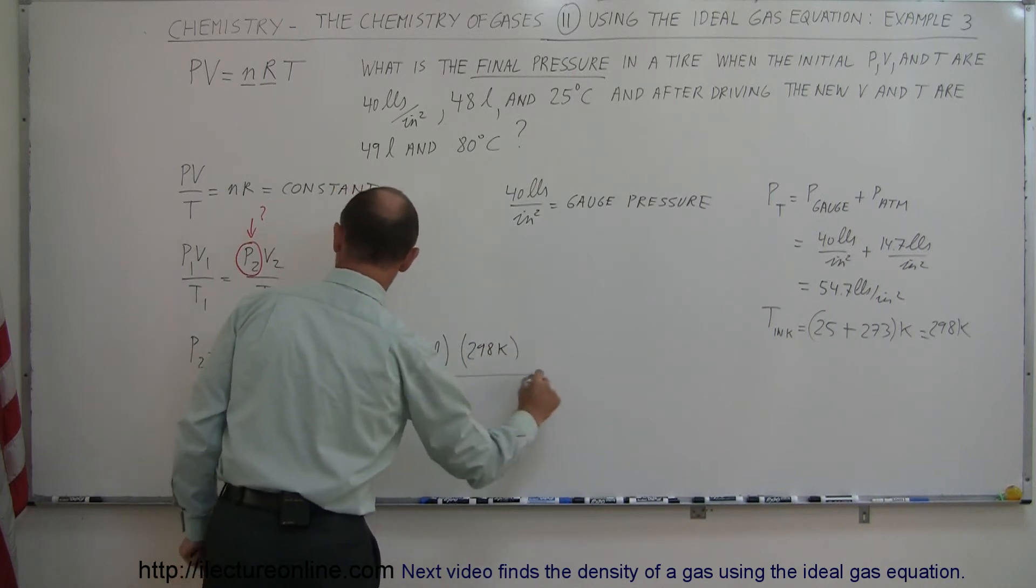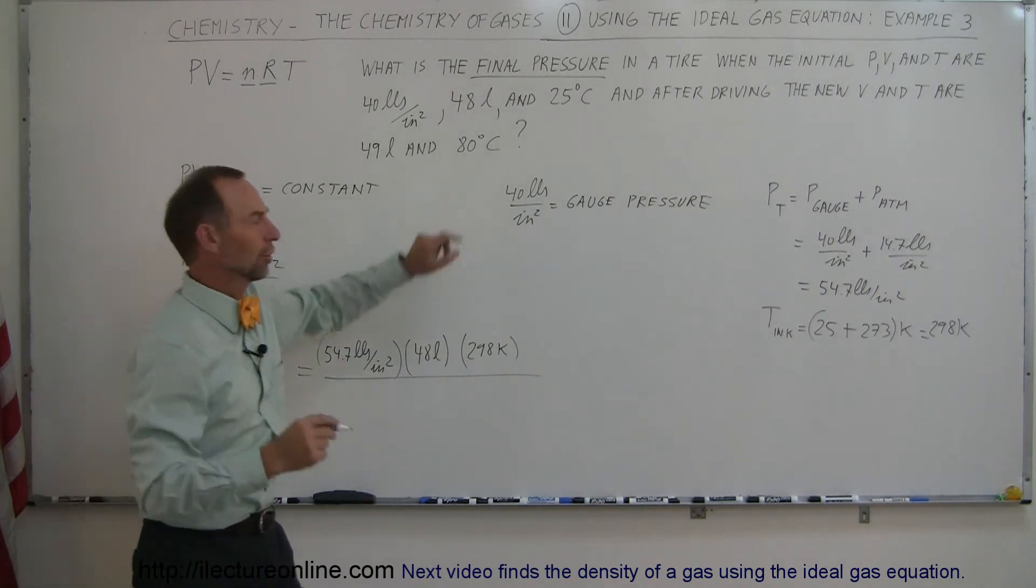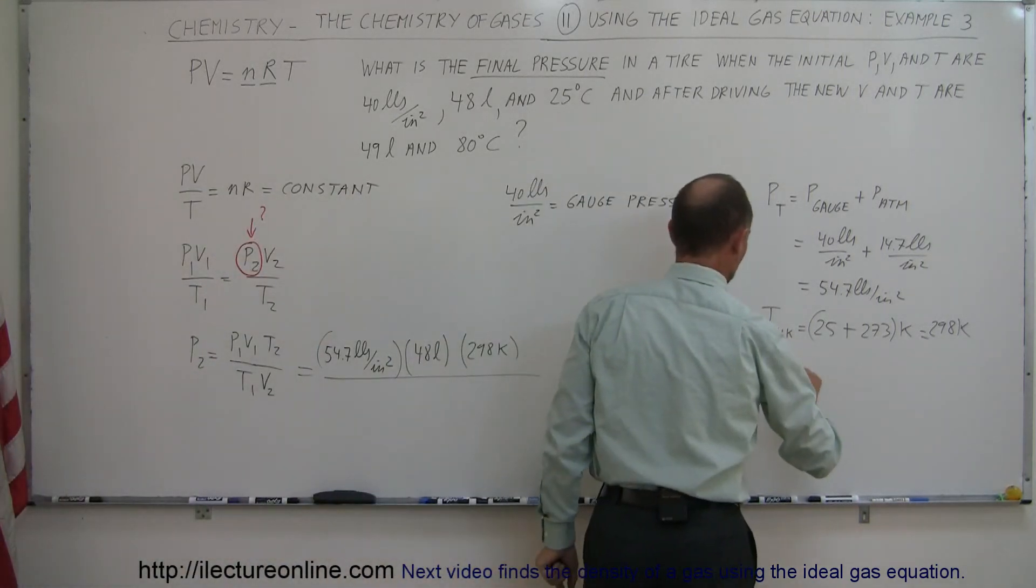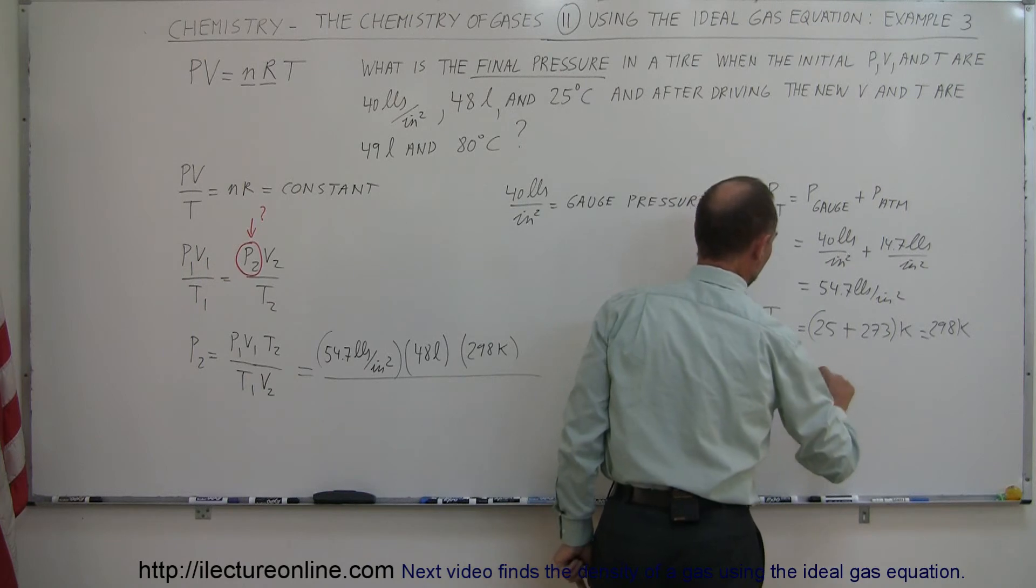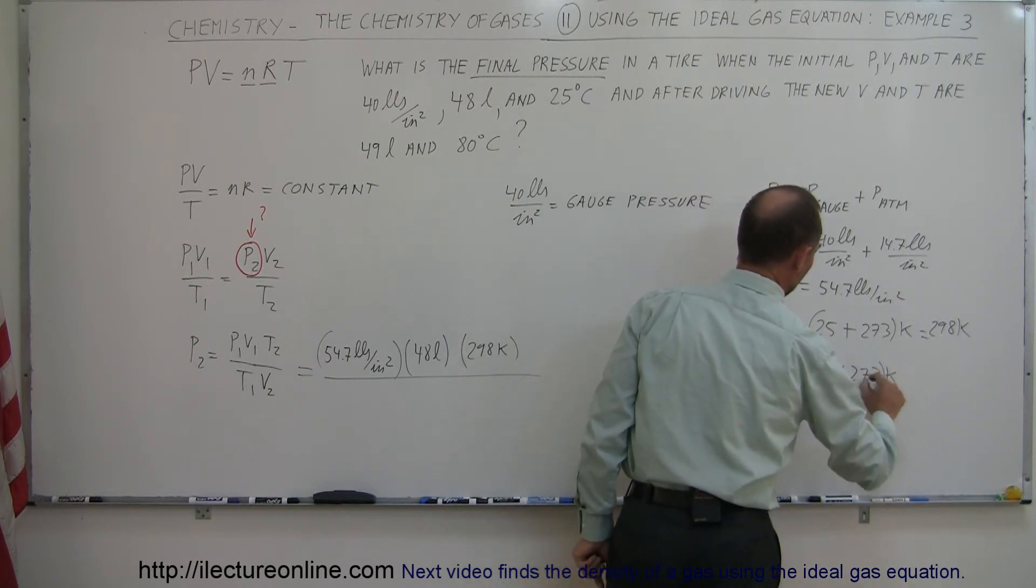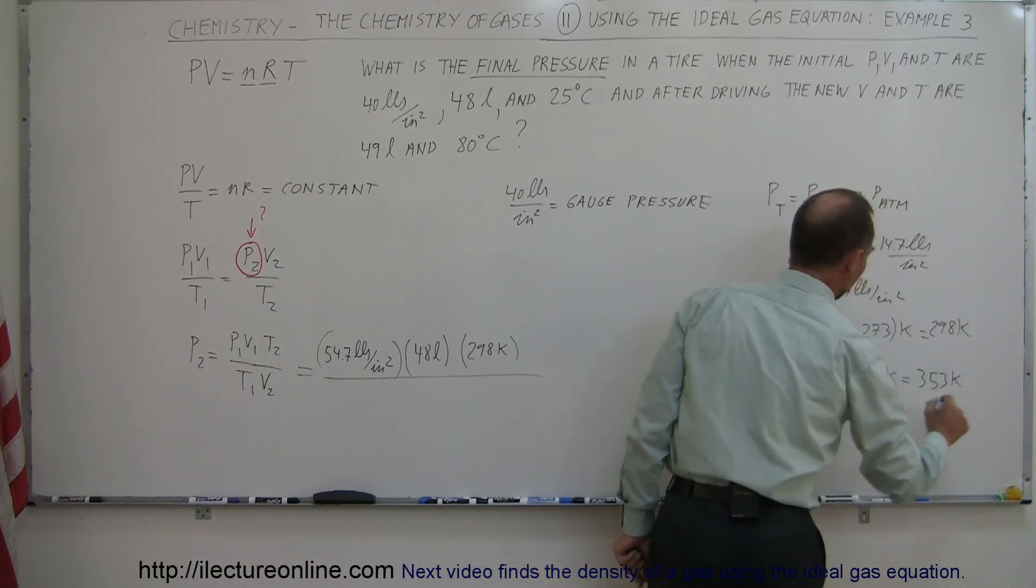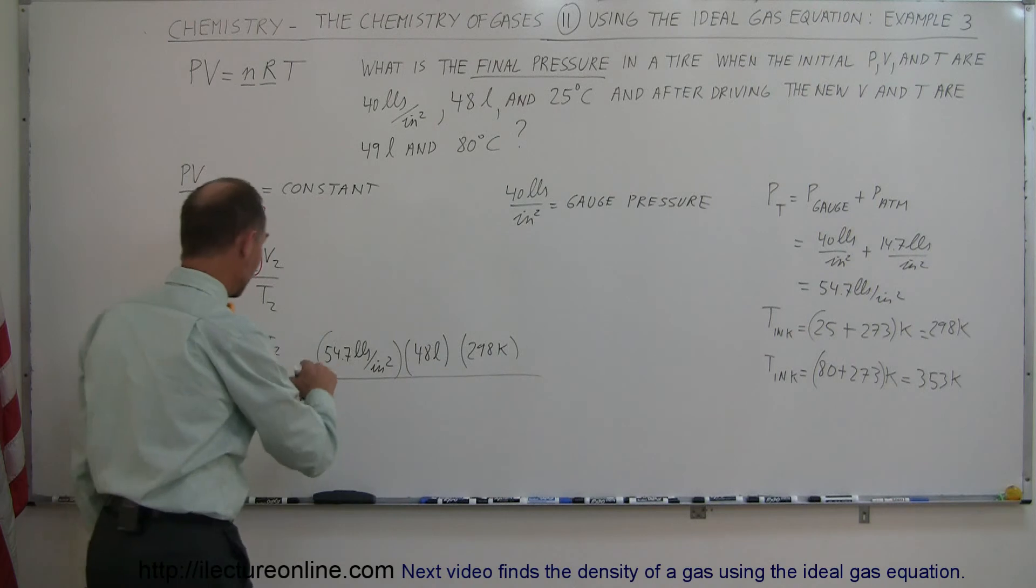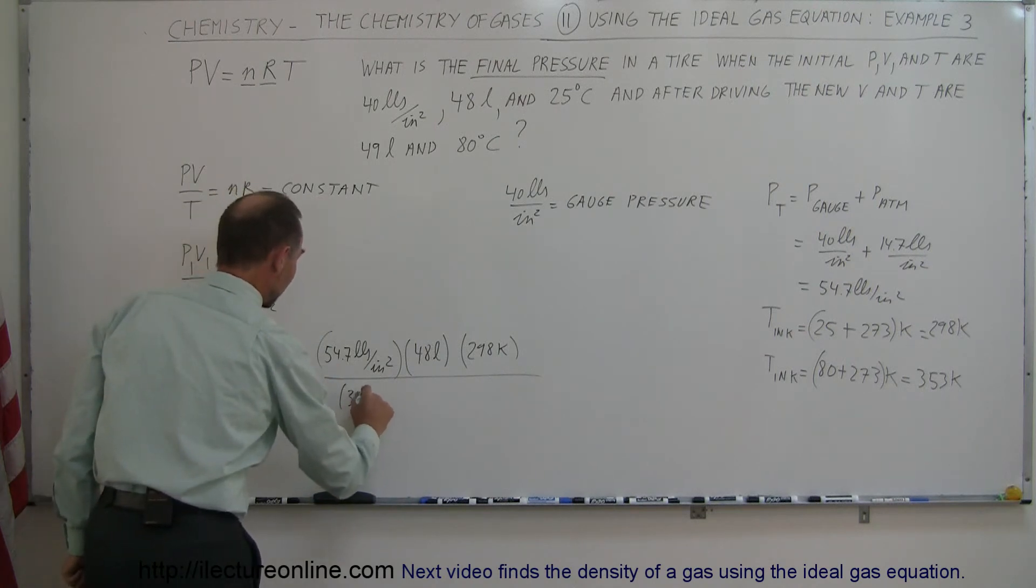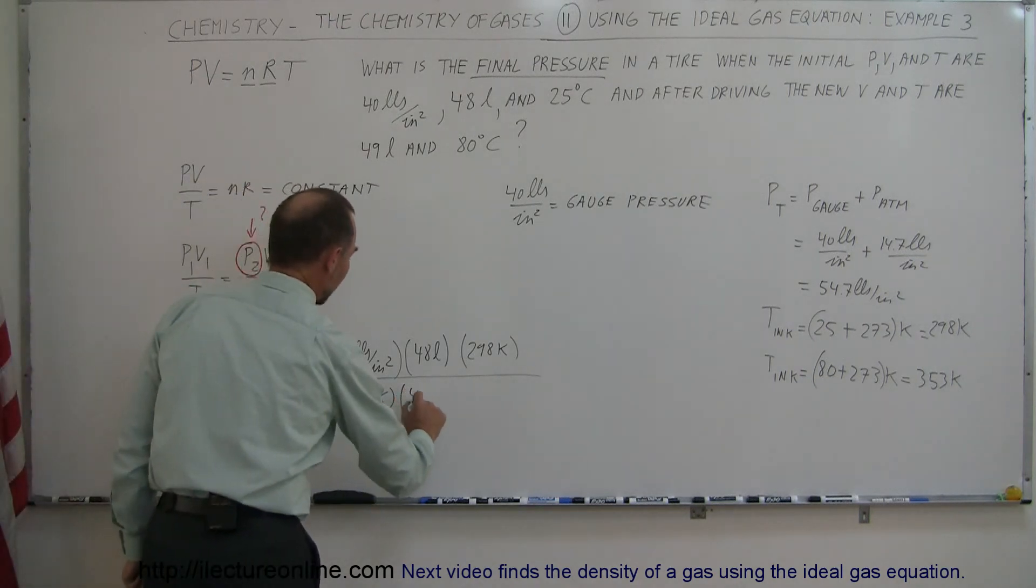We divide that now by the final temperature, and the final temperature is 80 degrees centigrade, converted to Kelvin. So temperature in Kelvin is equal to 80 plus 273 Kelvin, which is equal to 353 Kelvin. So we go ahead and put that in here as 353 Kelvin, and finally, final volume, 49 liters.